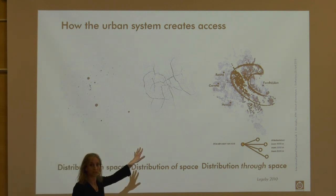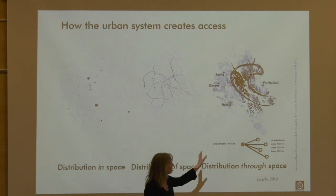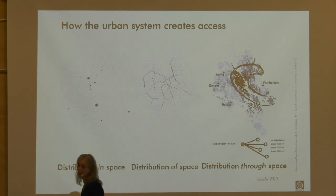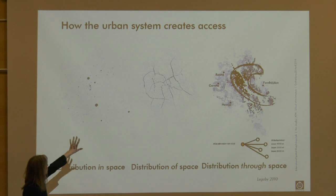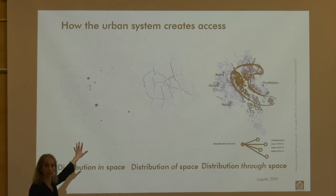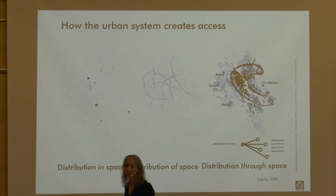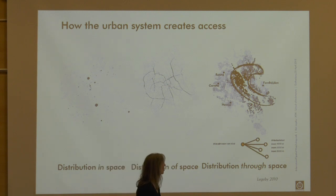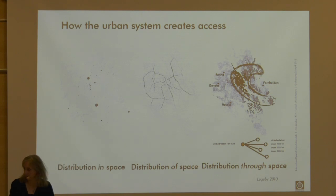Then we can look at the distribution of space, which says something about how space is connecting different functions in a city. And if we add where people live, where the houses are, and through space using the street network — either through metric distance or topological terms — how accessible are these? This gives one understanding of Södertälje and the workplaces, and we can see that some areas have much higher access to workplaces, which is very important for chances in the labour market. We can see how the million-homes programme areas actually have quite low access — the so-called job banana.